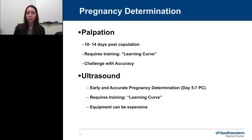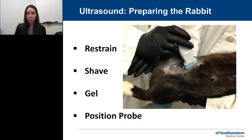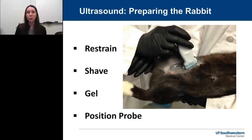Ultrasound requires training your eye for what you're looking for, where to position the probe on the rabbit, and the structures indicating pregnancy. But I found it much easier to train my eye for ultrasound than my hand for palpation. A drawback is that the equipment is expensive — you'll need to budget for it. However, early and accurate pregnancy results are invaluable to breeders, since time is money. Being able to determine pregnancy at 5 to 7 days versus waiting 10 to 14 days makes a big difference.